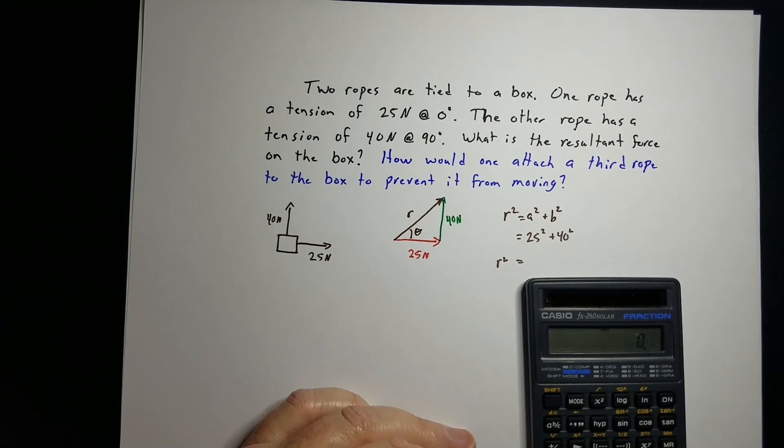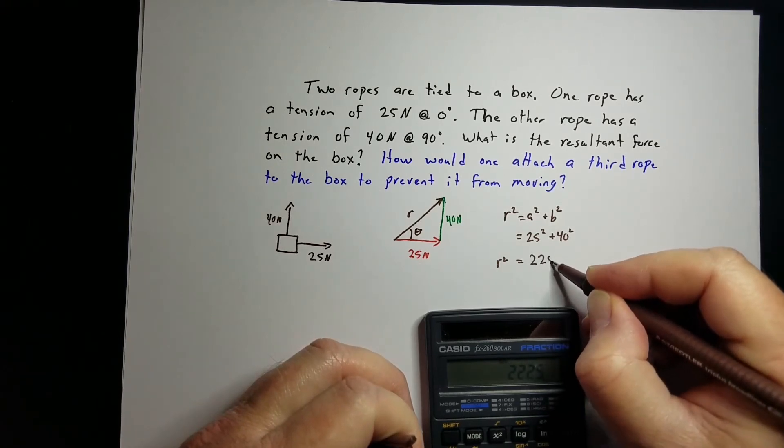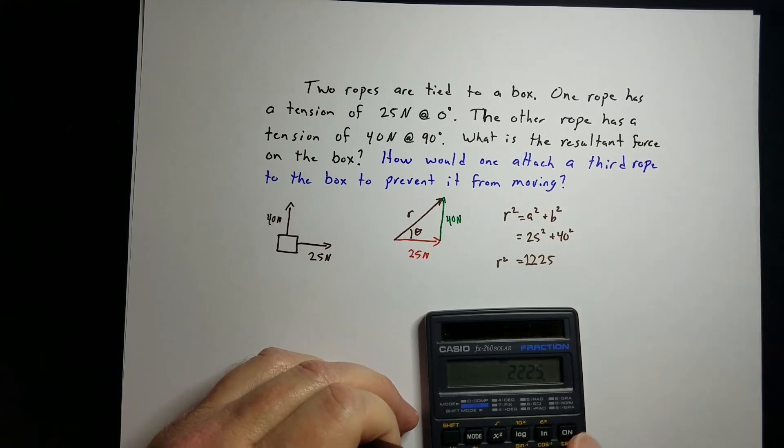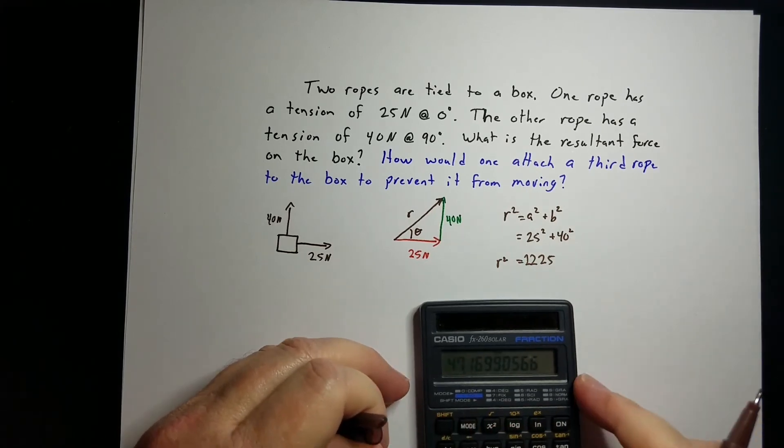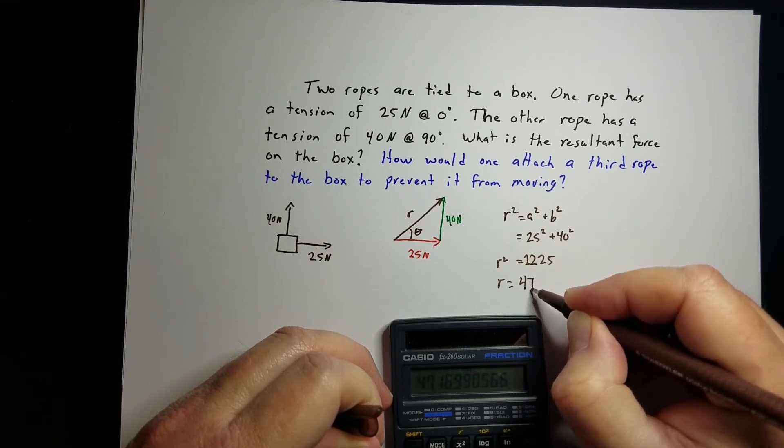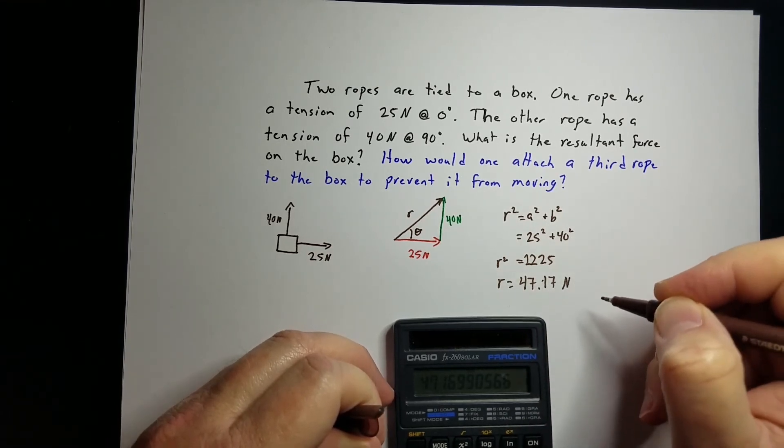If we do that, 25 squared plus 40 squared gives us 2,225. I want to take the square root of that, so r is 47.17 newtons.